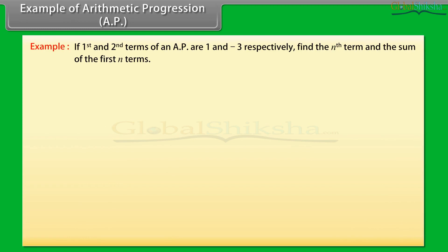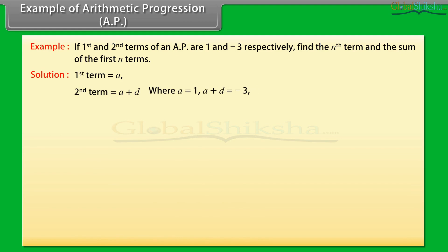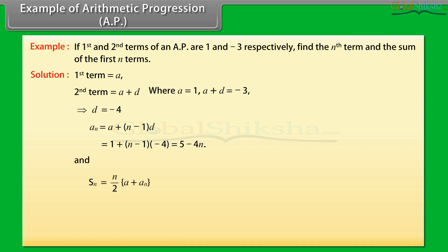Example: If the first and second terms of an AP are 1 and −3 respectively, find the Nth term and the sum of the first N terms. Solution: Let first term A = 1, second term A + D = −3, which implies D = −4. Then An = A + (n−1)D = 1 + (n−1)(−4) = 5 − 4n. And Sn = (n/2)(A + An) = (n/2)(1 + 5 − 4n) = n(3 − 2n).